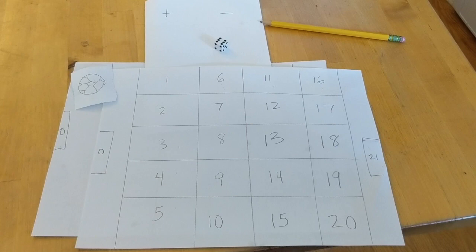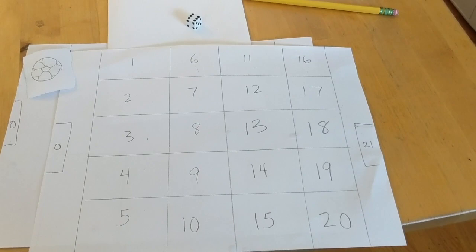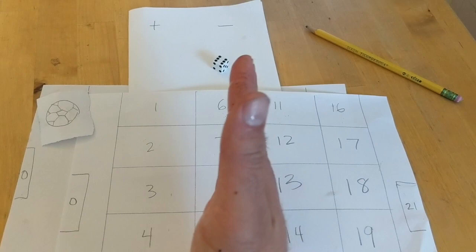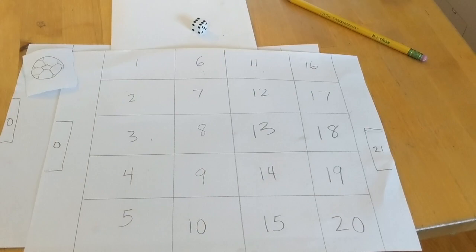So this is my recommendation for your setup for soccer math. It's important you have your two goals, your board of 20, you have a die, a pencil, and I put a plus and minus up here to remember that if I'm coming from this side, I'm adding. If I'm coming from this side, I'm subtracting.